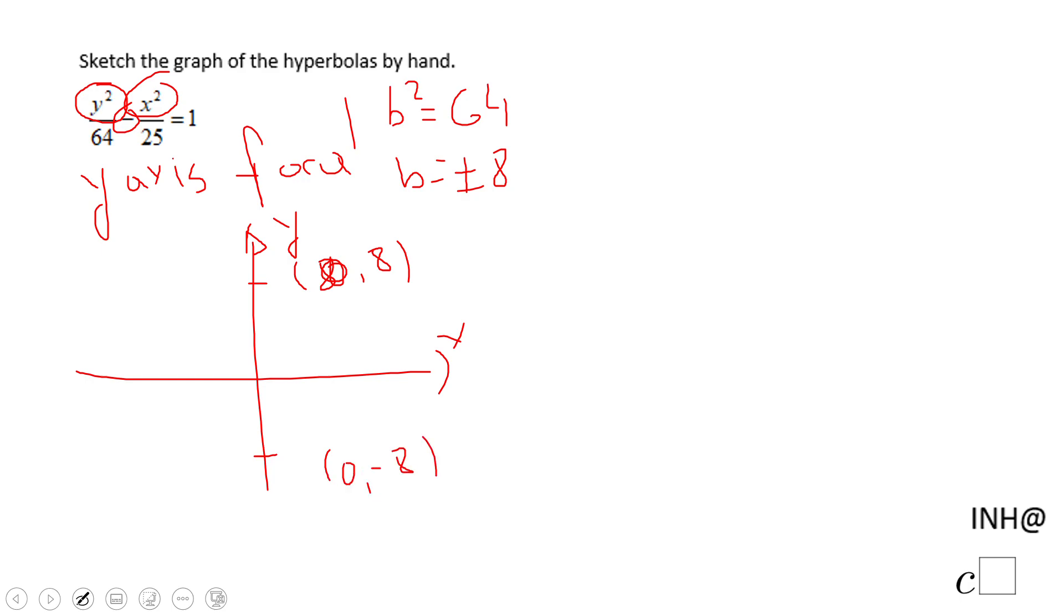Those are the two vertices of this hyperbola. I can sketch the hyperbola now, but to be more accurate, you need the asymptotes. For that reason, you're going to need a also. a² is 25, so a will be plus or minus 5. The asymptotes are going to be plus or minus b over a, which is 8/5 x.